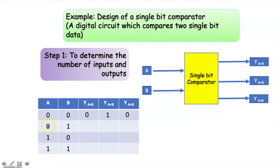For the second case, when A equals 0 and B equals 1, that means B is greater than A. So this is the valid condition. The output for A greater than B should be 0, the output for A equal to B should be 0, and the output for A less than B should be 1.